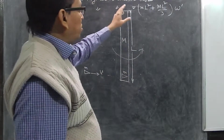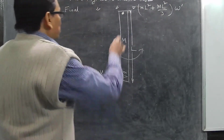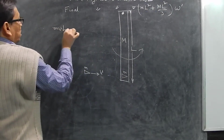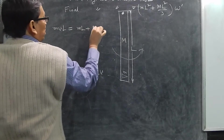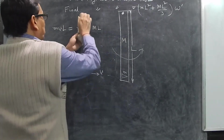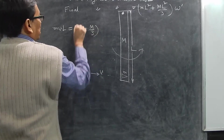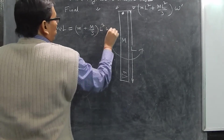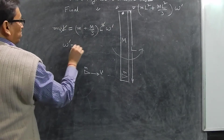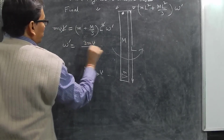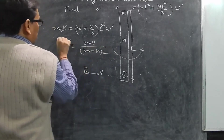Since angular momentum is conserved, we set initial equal to final: mVL = (mL² + ML²/3)·ωx. Taking L² common on the right side gives mVL = L²·(m + M/3)·ωx. The L on the left cancels one L from the right, so ωx = mV divided by L·(m + M/3), which simplifies to ωx = 3mV / ((3m + M)·L). This is the final angular velocity of the wooden log.